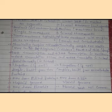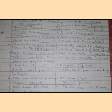Prokaryotes may have pili and fimbriae. Eukaryotes may have cilia, but not pili and fimbriae.